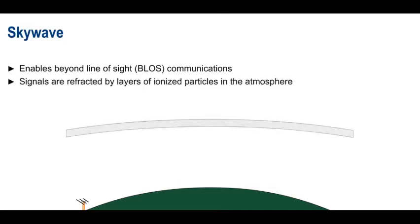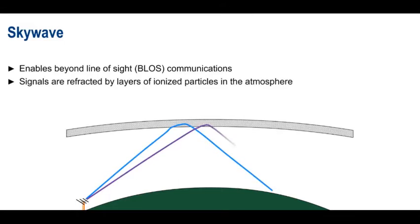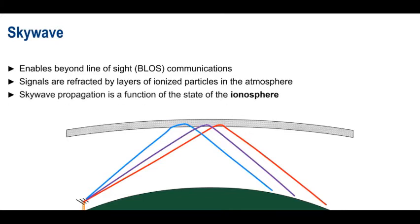One of the most important propagation modes of HF is skywave, because it's skywave propagation that enables beyond line of sight or worldwide communications. In skywave, layers of ionized particles in the upper atmosphere refract HF signals back towards the Earth, allowing communications over many thousands of kilometers. The distances that can be covered by different frequencies are almost entirely a function of the state of these layers of ionized particles, collectively referred to as the ionosphere.